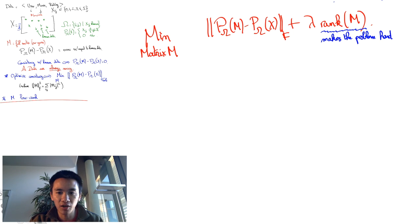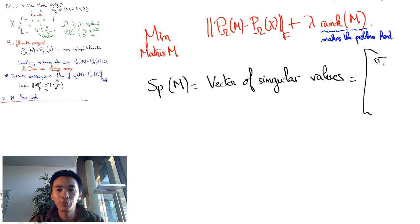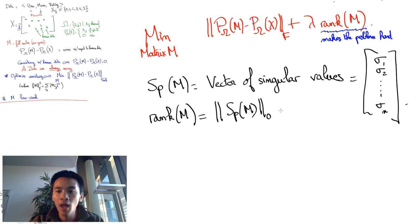To render the problem tractable in practice, one solution is to get rid of the rank and to replace it with something similar to the rank. And that's where SVD kicks in. It turns out that the vector of singular values of the matrix M is a great indicator of the rank of the matrix.